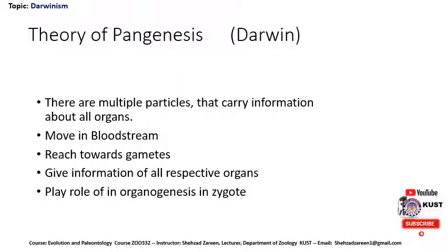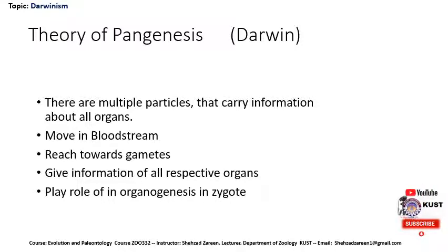Darwin gave another important idea about heredity and called it the theory of pangenesis. According to this theory, there are small multiple particles in every part of the body that carry the information of that particular organ where they are present. They move in the bloodstream, reach the gametes at the time of reproduction, give information of all respective organs to the egg and sperm, and have an important role in organogenesis of the zygote.